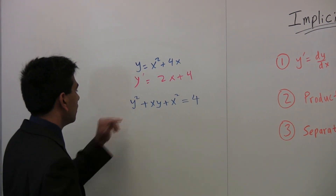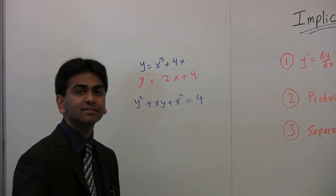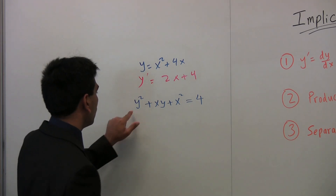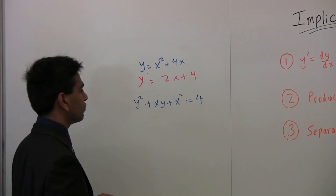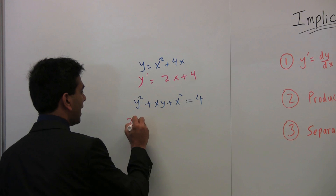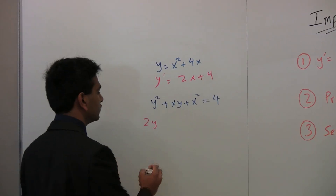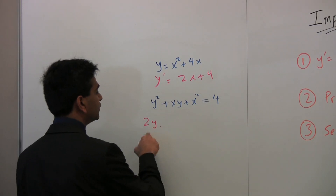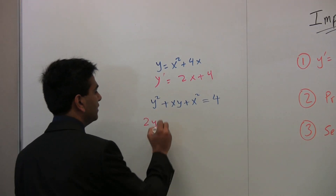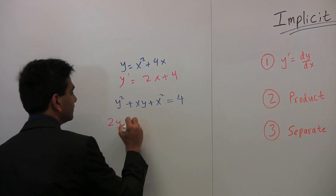We're going to take the derivative of each term individually — that's how you do implicit differentiation. What's the derivative of y squared? Well, it's tempting to say 2y, but keeping step two — the chain rule — in mind, the derivative is actually 2y times the derivative of y, which, as we said from step one, is just dy/dx.